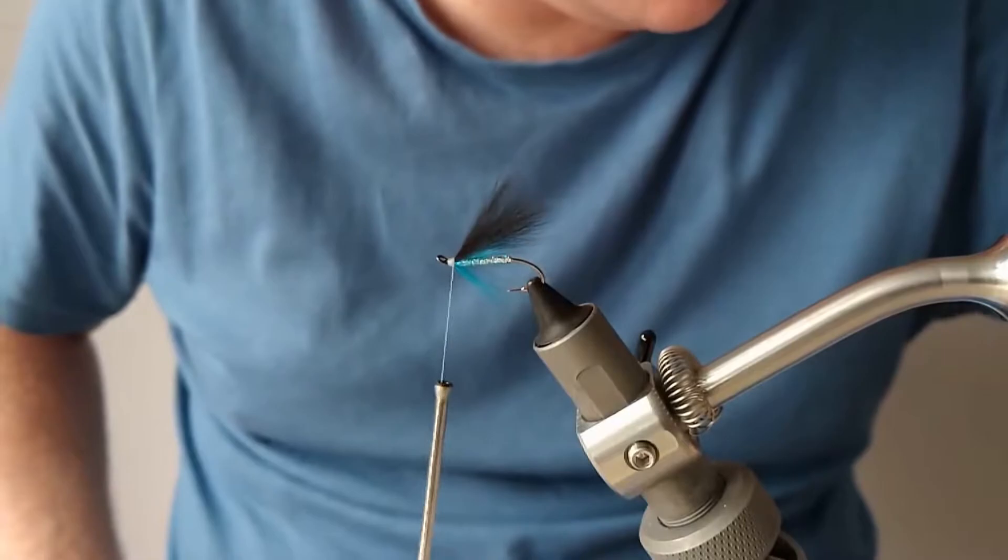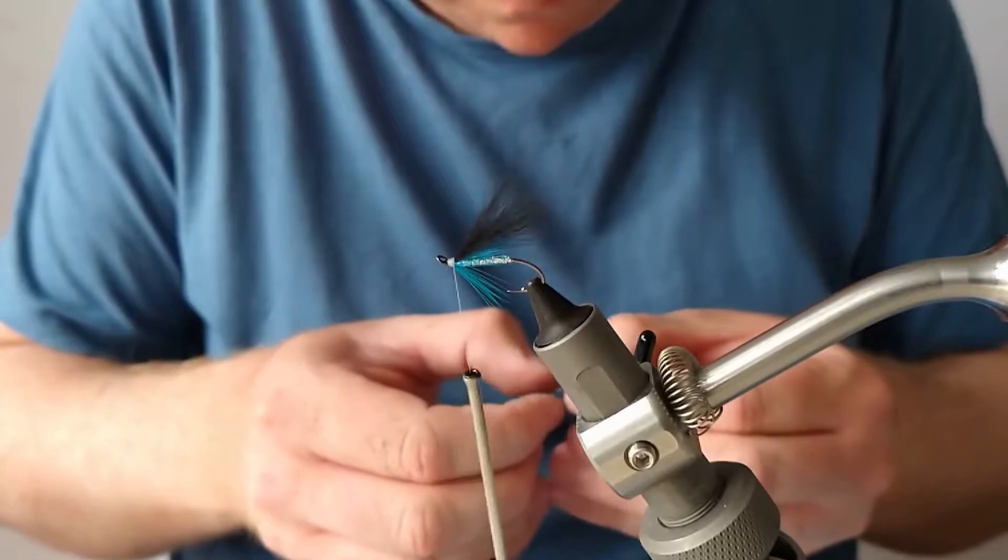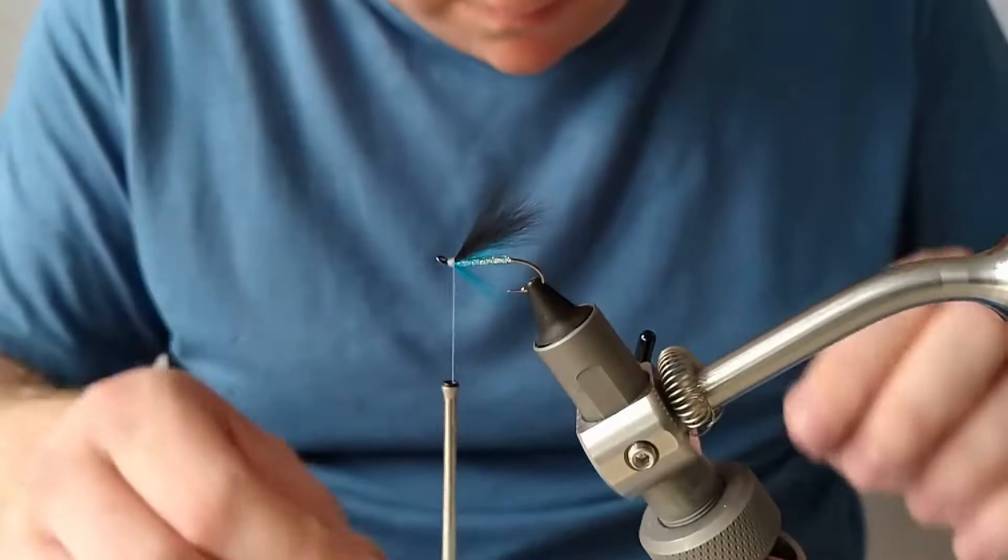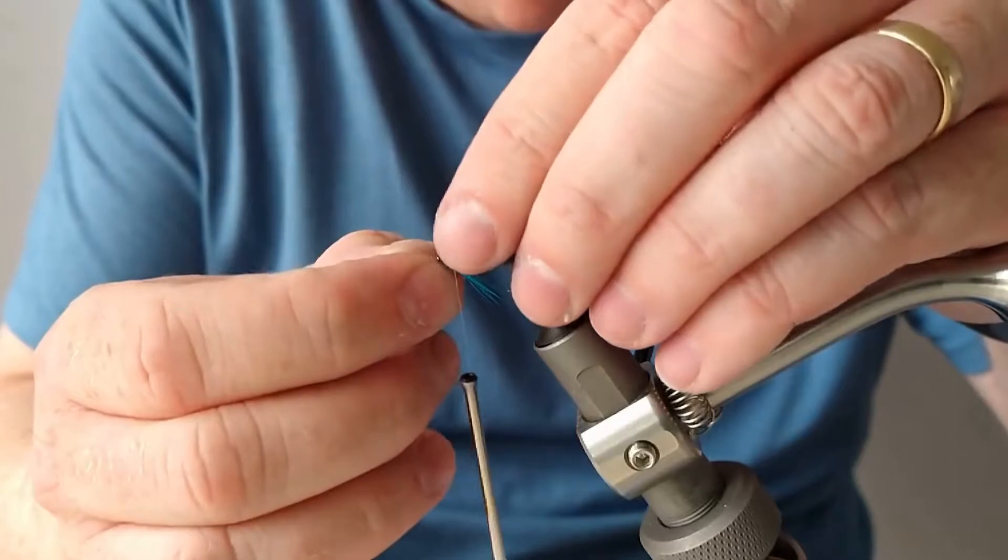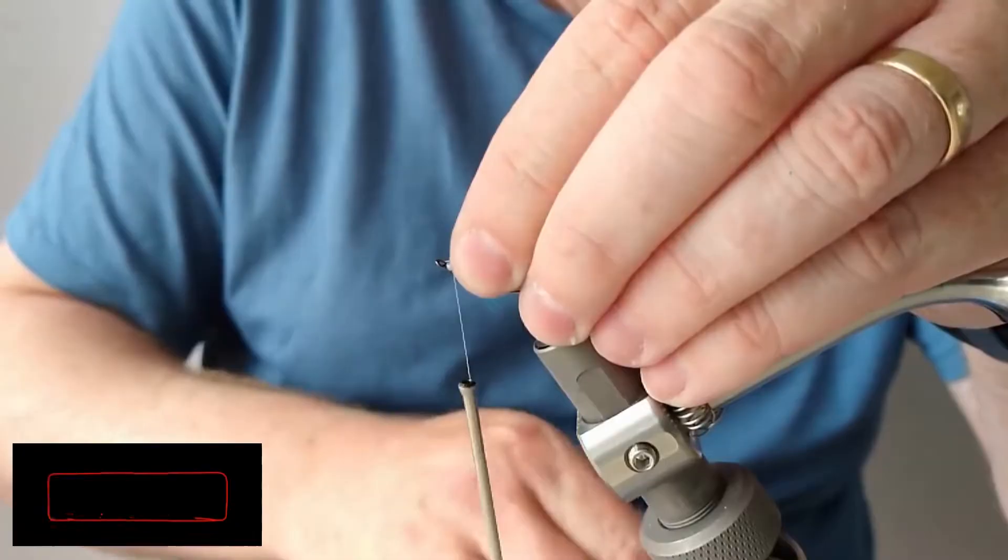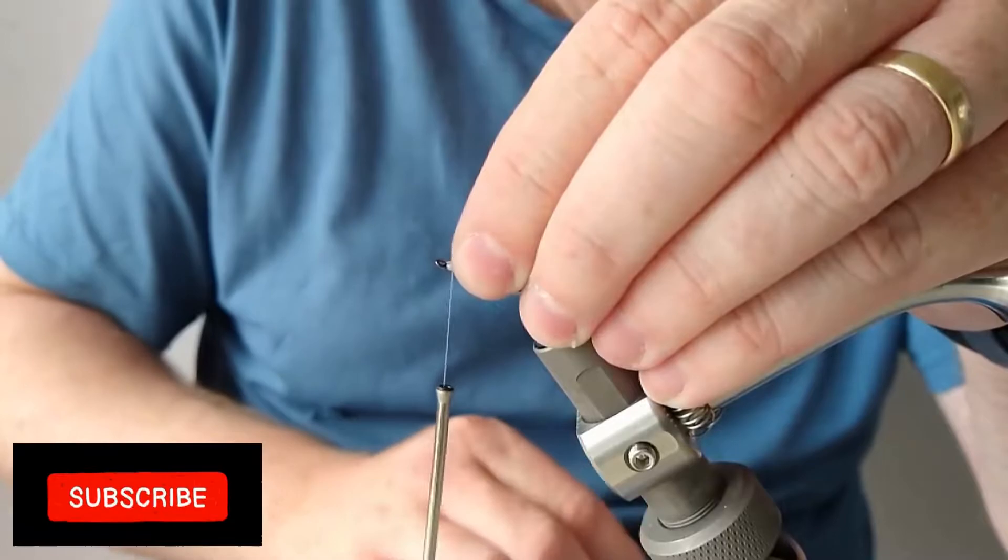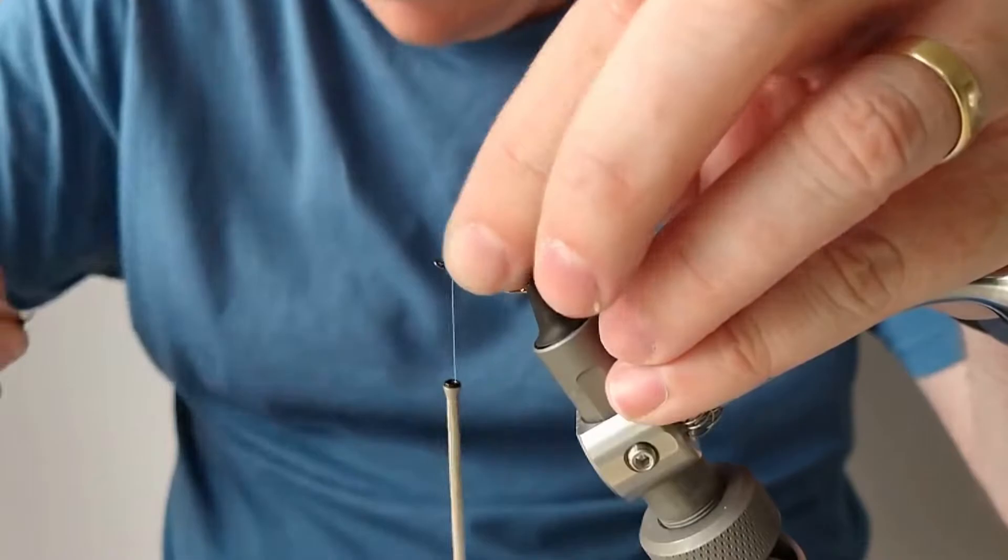Then the last thing, the fly is complete if you want to use it like that. But then I am going to add in some jungle cock eyes. This just sets off the fly really in my opinion. It makes you think it is a salmon fly as well if you have the jungle cock in.